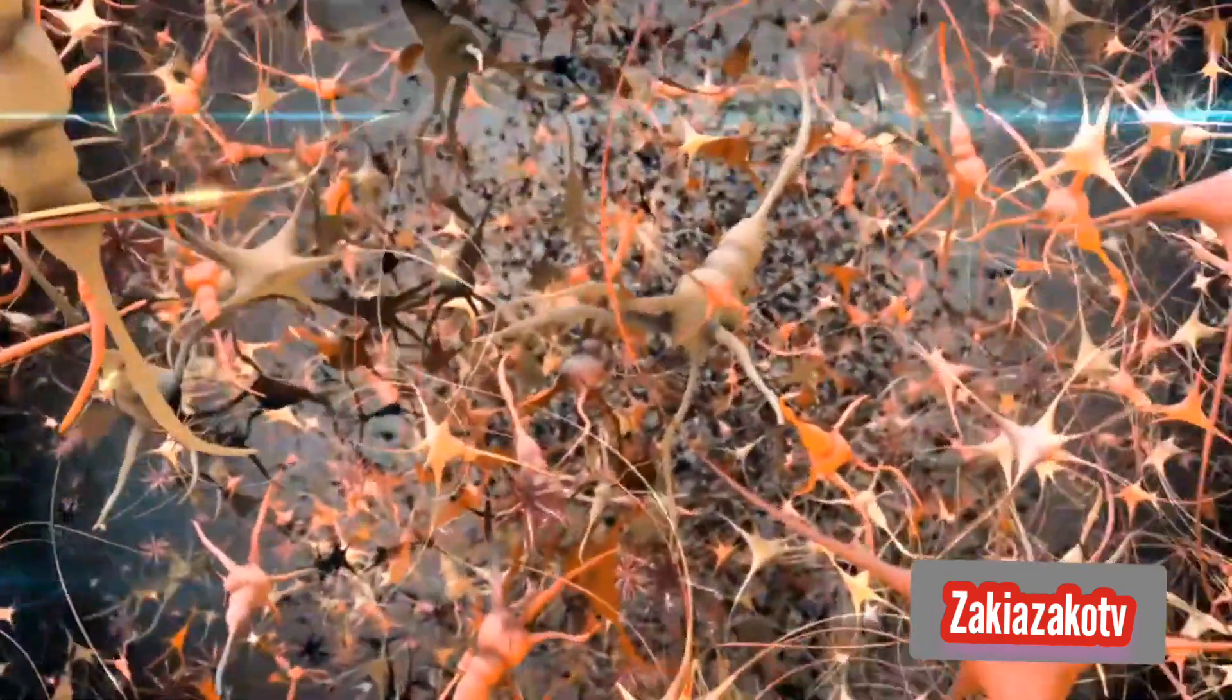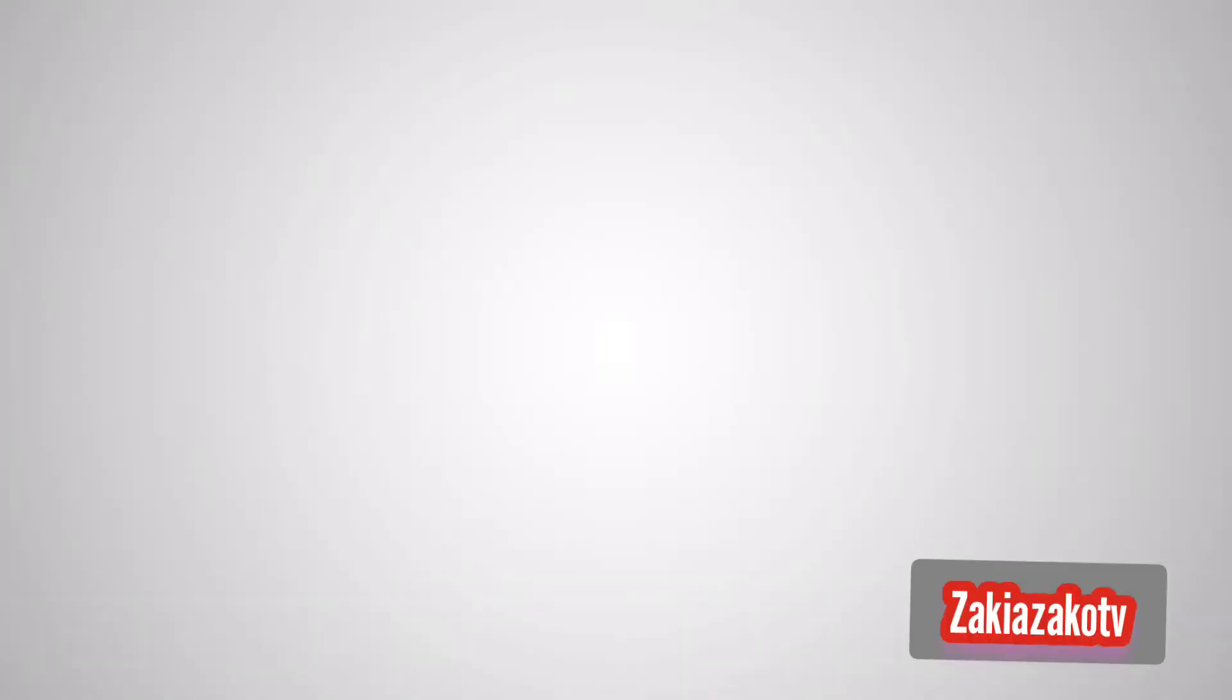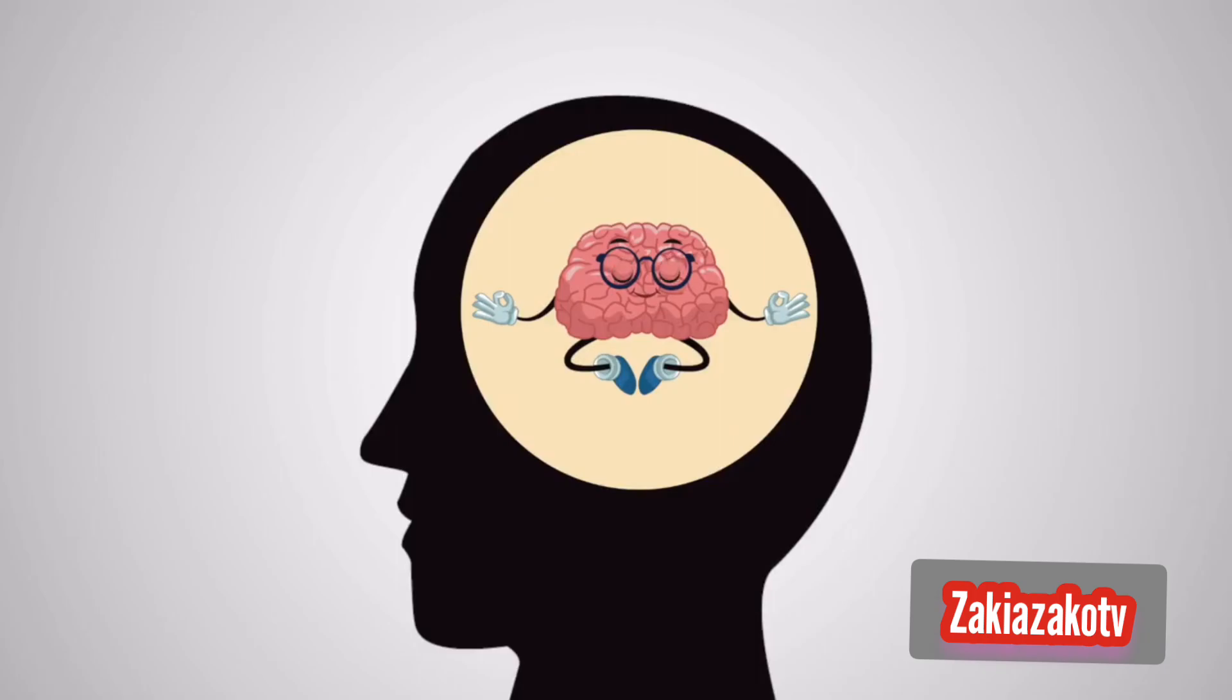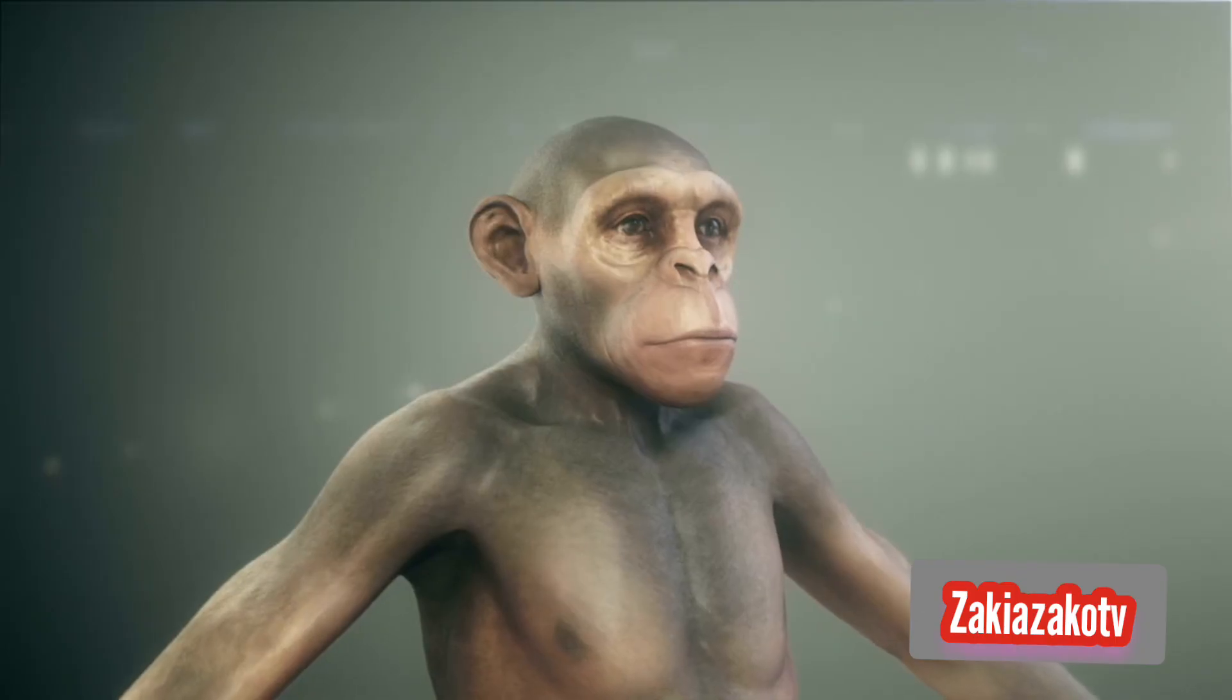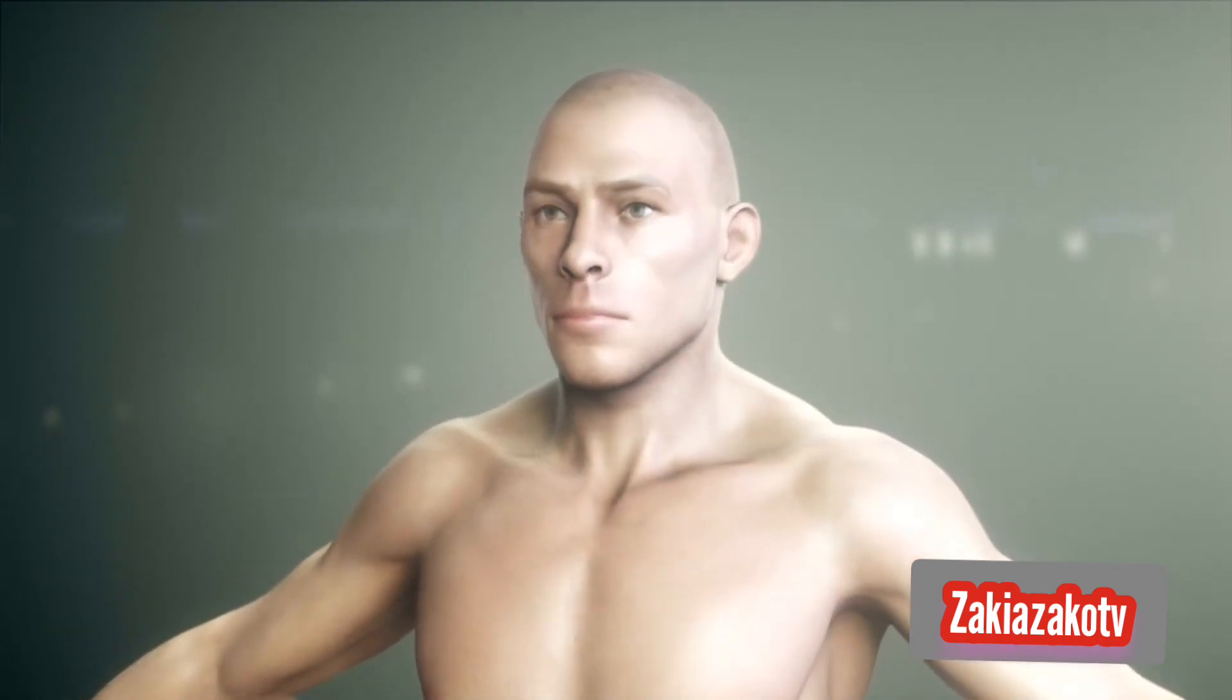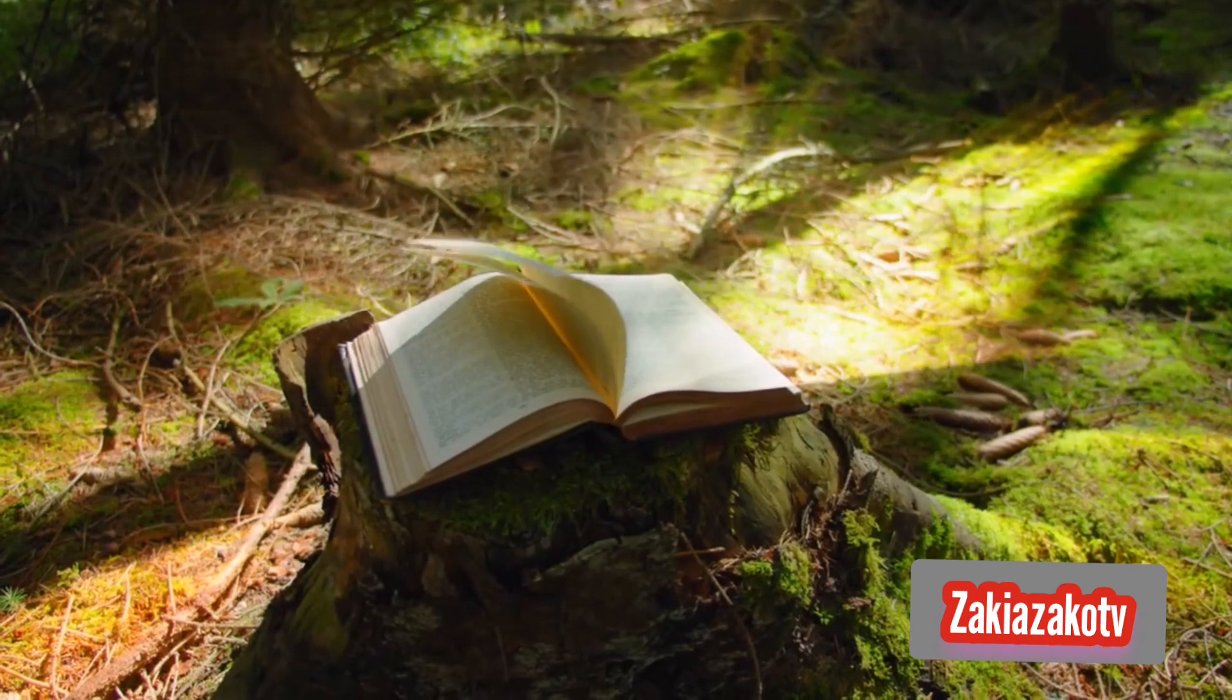Thanks to advances in neuroscience, we now understand that thoughts have a basis in neural networks and emotions in certain neurotransmitters. Is there a physical basis for consciousness, too? This idea also raises questions about the evolution of consciousness and when it first emerged. While some point back millions of years to the first great apes, or hundreds of thousands to the first archaic humans, others look to a much later date.